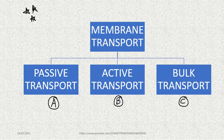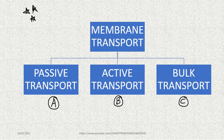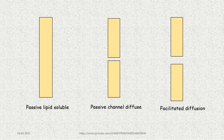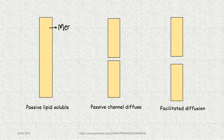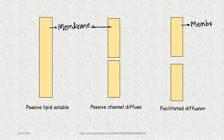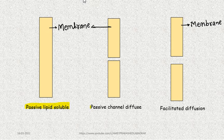The passage of substances across the bio-membrane involves these three mechanisms. For passive transport, a diagram is referenced showing rectangular parts representing membranes. Across this membrane, three methods operate: passive lipid-soluble diffusion, passive channel diffusion, and facilitated diffusion.